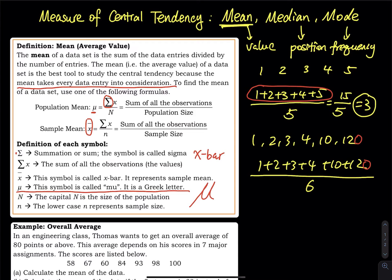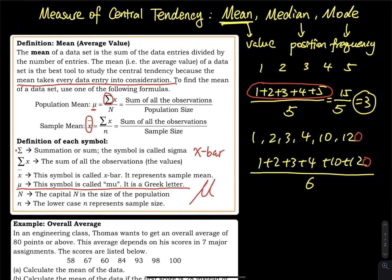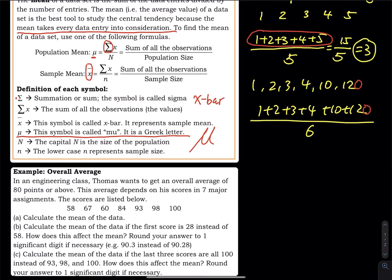We have an example here. In an engineering class, Thomas wants to get an overall average of 80 points or above. This average depends on his scores in seven major assignments. The scores are listed below.